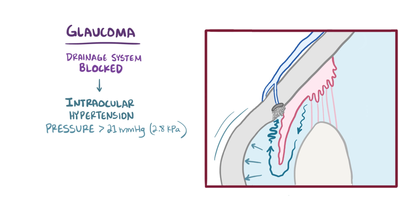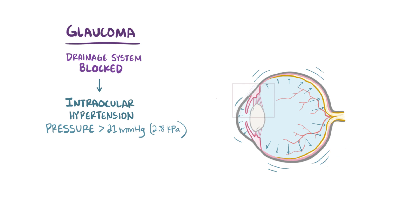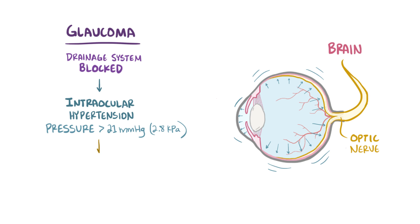This high pressure affects all the structures of the eye, including the optic nerve, which is the nerve that carries visual information from the eyes to the brain, and this means that, over time, as the optic nerve gets damaged, glaucoma leads to vision loss.